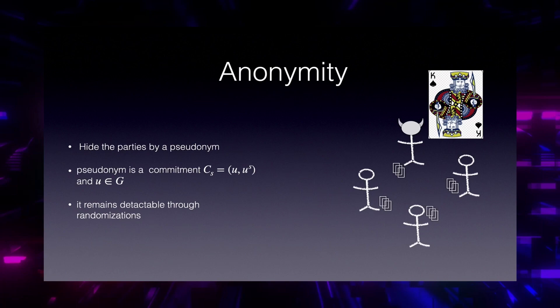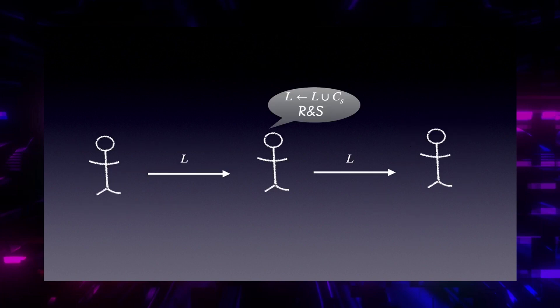To build such a detectable commitment, you choose a secret S and commit to S through (U, U^S). Even after randomization you can detect this commitment because the second part is always S raised to the power of the first part. To summarize: we have a list L. This list goes through the parties one by one. Each party that receives list L adds their pseudonym — their commitment — to the list, then randomizes and shuffles it, and sends list L to the next party, and so on.